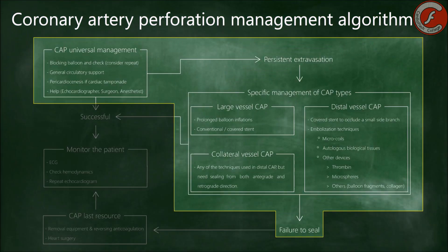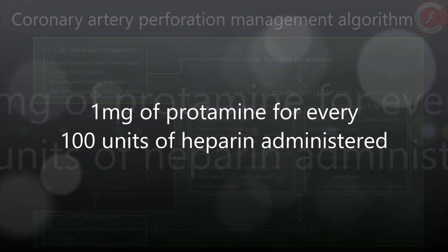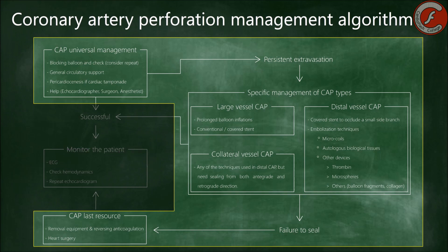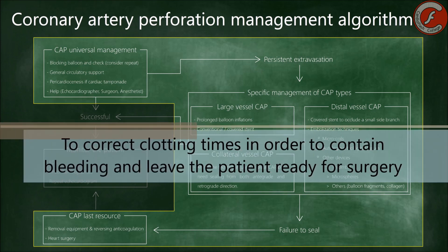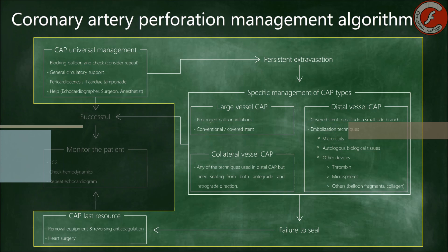Finally, if the universal and specific measures fail and bleeding persists, we should consider removing the angioplasty material and administering intravenous protamine at a dose of 1 mg for every 100 units of heparin administered, since the goal is to achieve an activated clotting time less than 150. Fresh frozen plasma can be useful, especially if the patient has previously been anticoagulated with bivalirudin. The idea is to correct clotting times to contain bleeding and leave the patient ready for emergent cardiac surgery if necessary.